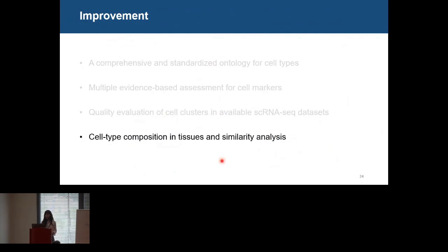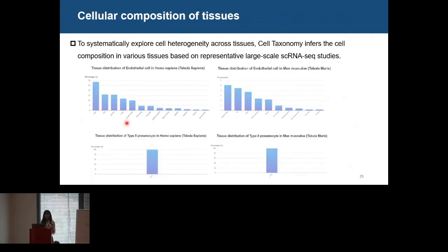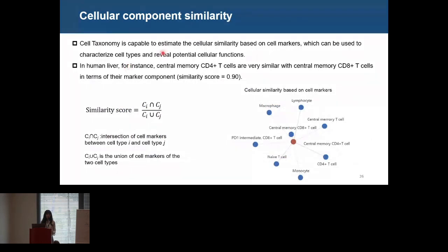Last but not least, we characterize cell types in more aspects such as cell type composition in tissues and cellular similarity. In Cell Taxonomy, you can see the distribution of each cell type in multiple tissues. For example, endothelial cells are distributed in tens of tissues in both human and mouse, while lymphocytes are very specific, found only in lung tissue. Cell Taxonomy can also estimate cellular similarity based on cell markers. In human liver, central memory CD4-positive T cells are very similar to central memory CD8-positive cells in terms of their marker composition, indicating they may have very similar function.